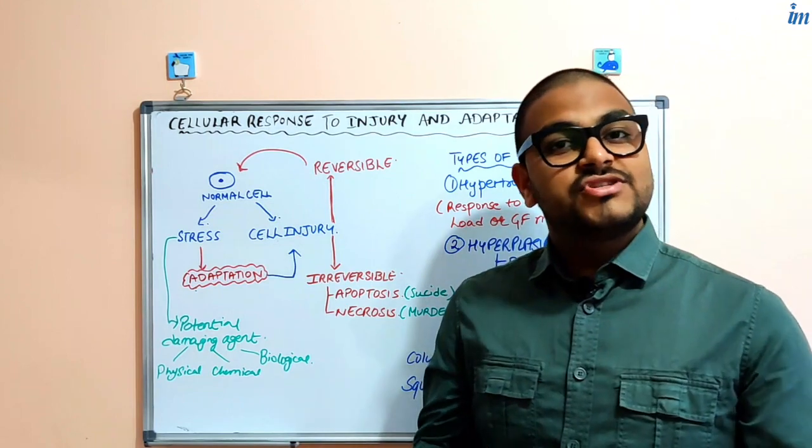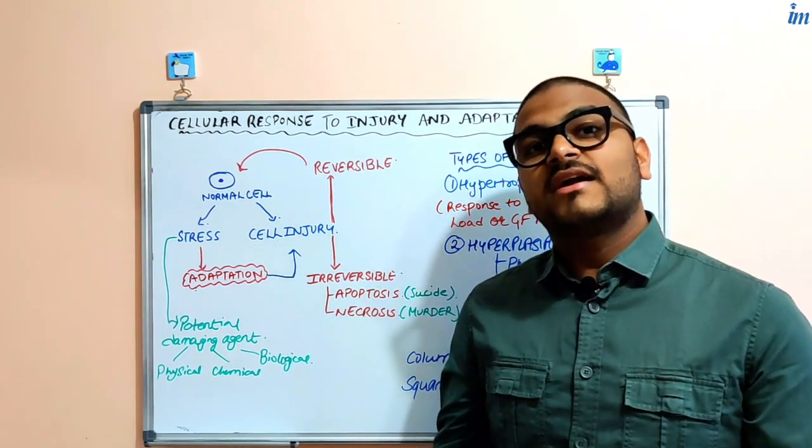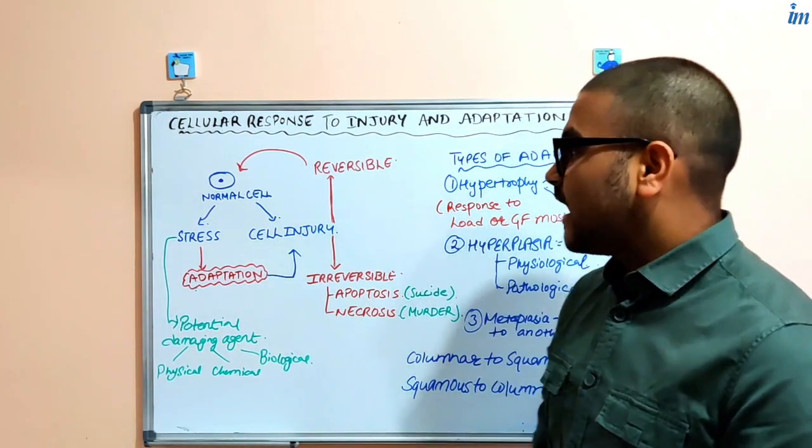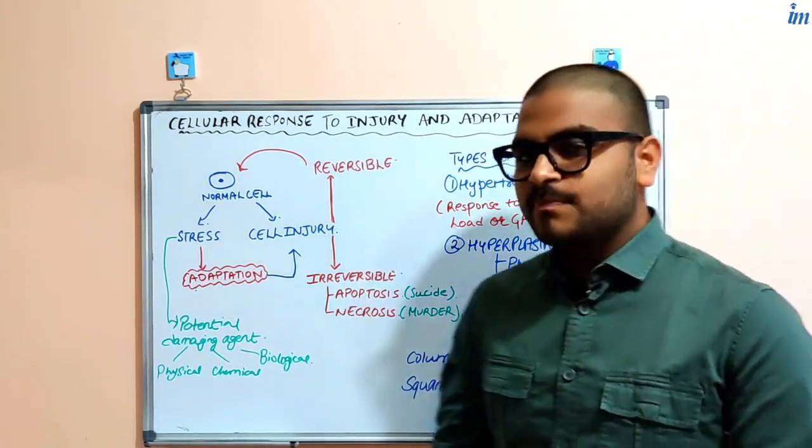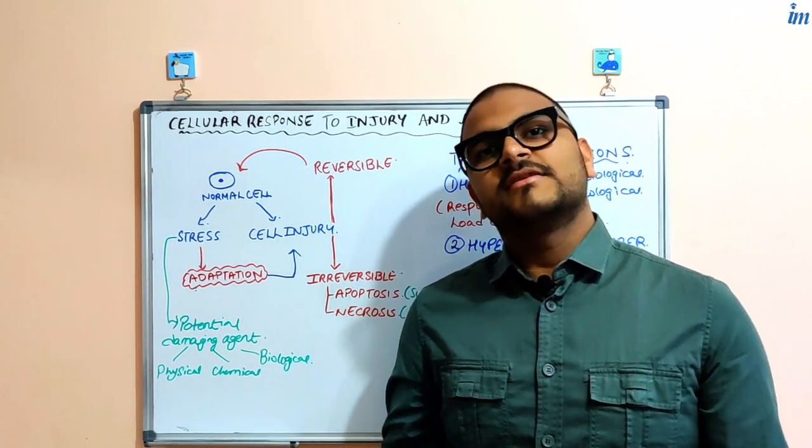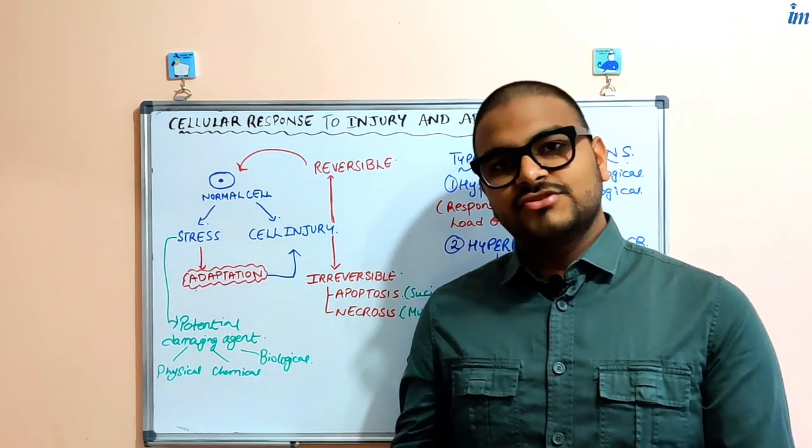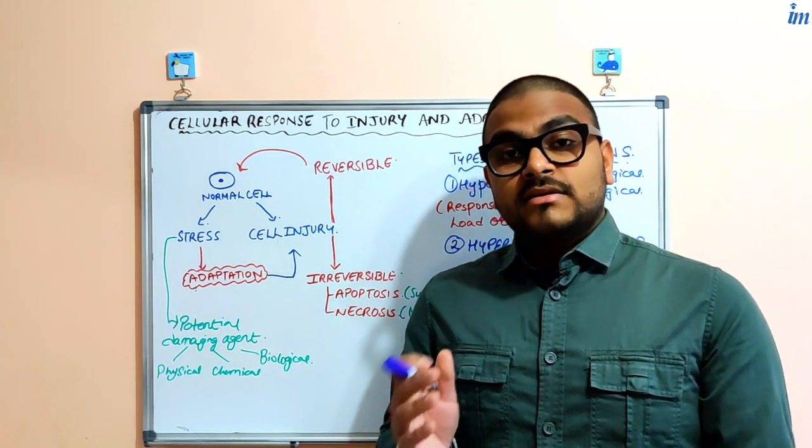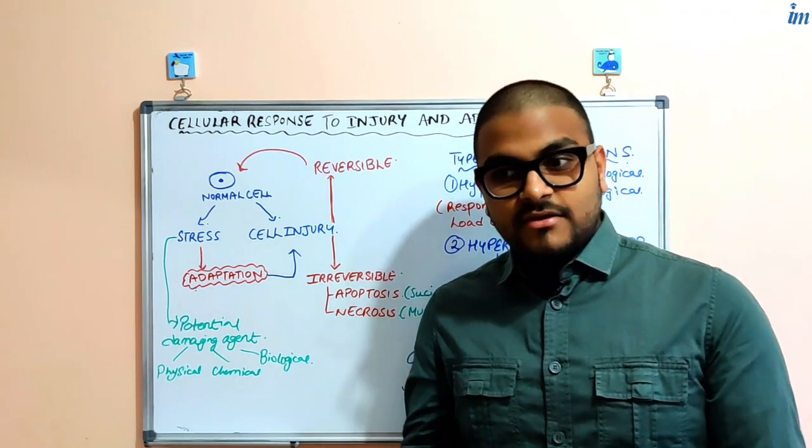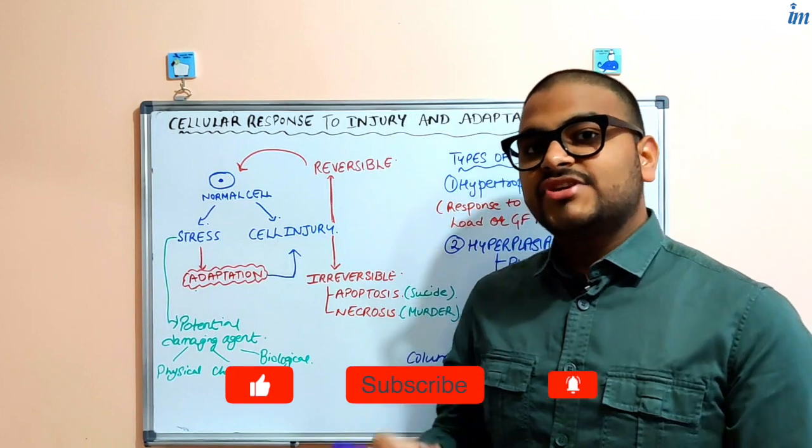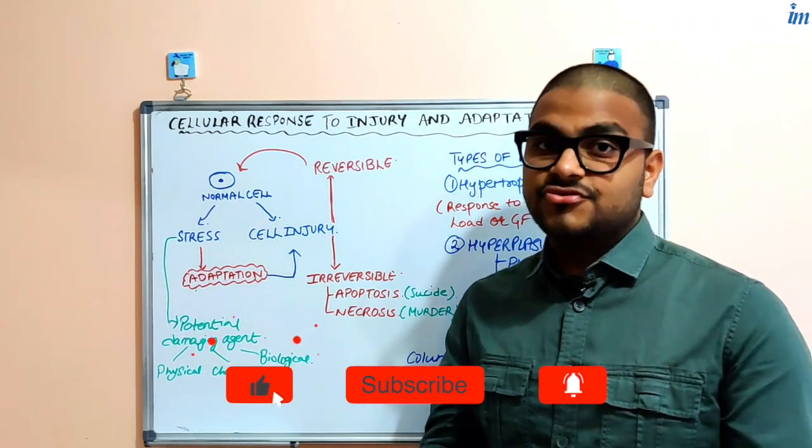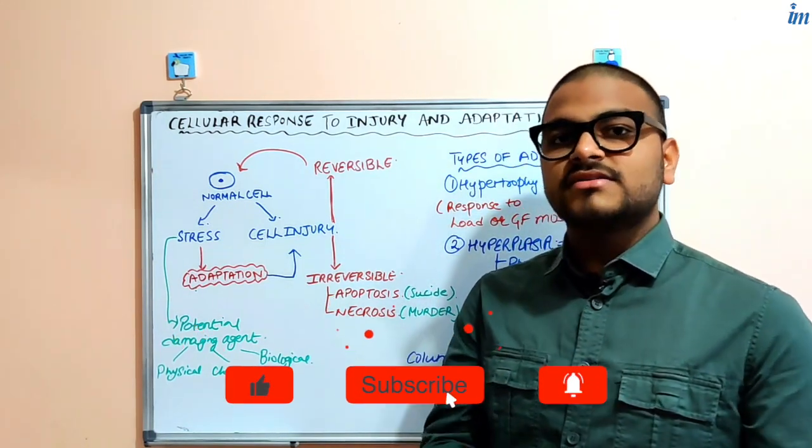The type of changes that are occurring can be reversible or irreversible. You should have a clear-cut concept that after cell injury has occurred, the type of changes that occur in the cell defines whether the injury is reversible or irreversible.